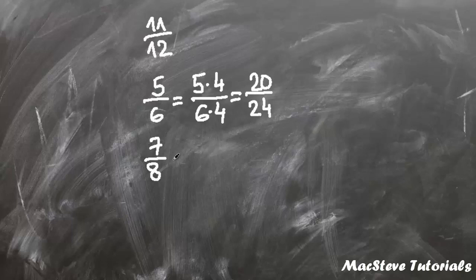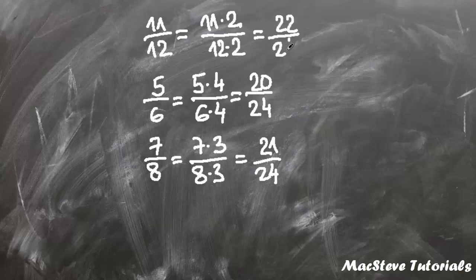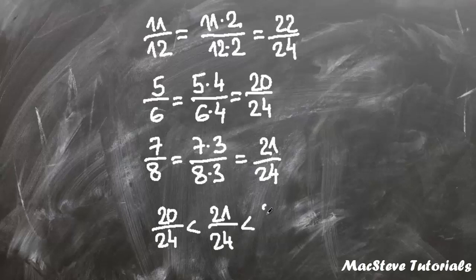Next we must multiply 7 over 8 by 3 and we get 7 times 3 over 8 times 3, which is 21 over 24. Next we multiply 11 over 12 by 2 and we get 11 times 2 over 12 times 2, which is 22 over 24. By comparing these newly obtained expressions we can see that 20 over 24 is lesser than 21 over 24, which is lesser than 22 over 24. Which means that 5 over 6 is lesser than 7 over 8, which is lesser than 11 over 12.